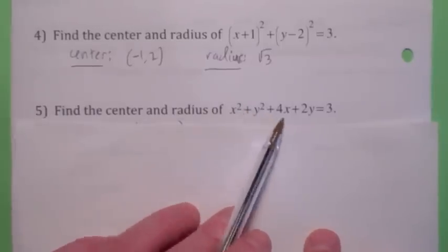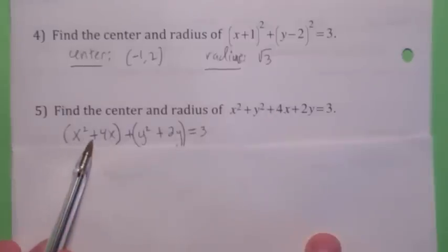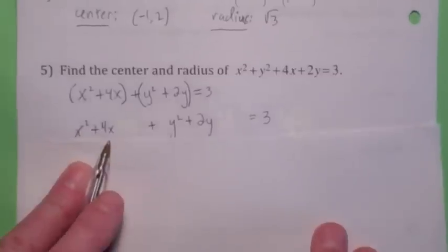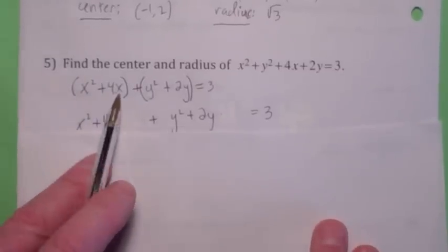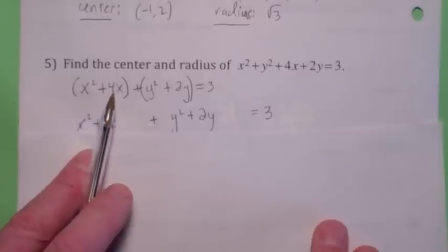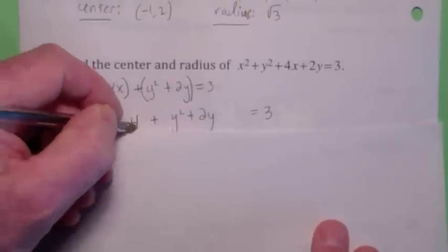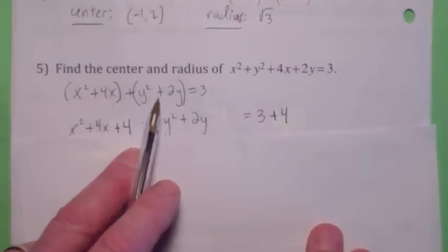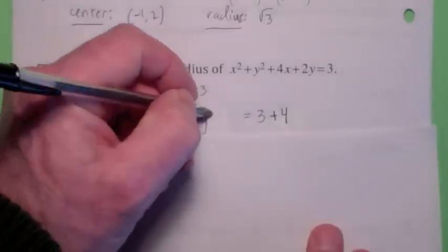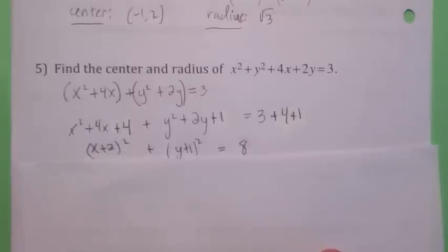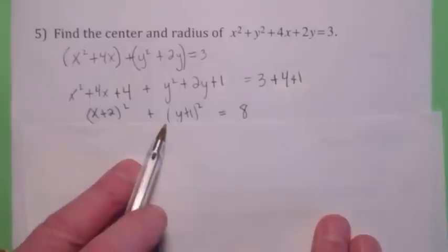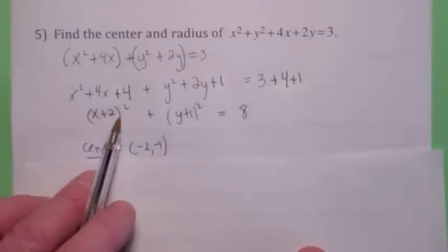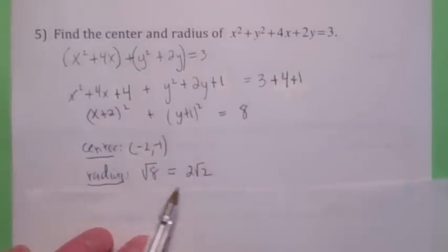Group the x's and y's: rewrite as x squared plus 4x plus y squared plus 2y equals 3. To complete the square on x: take half the coefficient of x, which is 2, square it to get 4, and add 4 to both sides. For y: take half of 2, which is 1, square it to get 1, and add 1 to both sides. The left side becomes (x plus 2) squared plus (y plus 1) squared, and the right side is 8. So the center is (negative 2, negative 1) and the radius is the square root of 8, which is 2 radical 2.